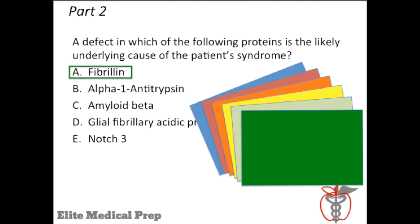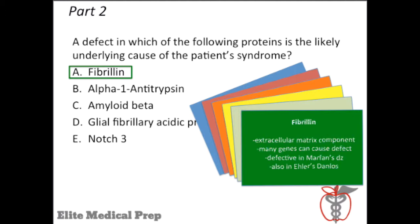If you were making flashcards for this question, an appropriate flashcard might include: extracellular matrix component; many genes can cause a defect; defective in Marfan's disease; and also defective in Ehlers-Danlos. The flashcard shown here only has a limited amount of information. Elite Medical Prep recommends no more than five bullet points per card. It's also important to incorporate flashcards correctly into your study plan, deciding when to use them, how many cards to make, and what subjects to emphasize.